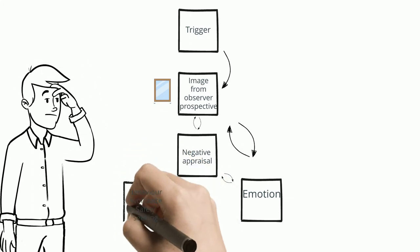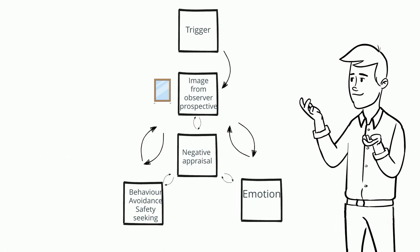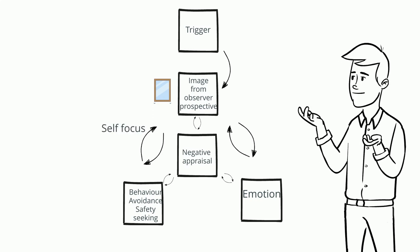Last on the list are behaviours such as avoidance and safety seeking behaviours. Some examples are examining parts of the body, camouflaging the body, or keeping their head down and avoiding contact. These all either increase focus on the body or stop the image and thoughts from being corrected.